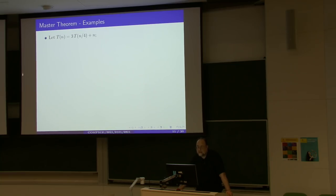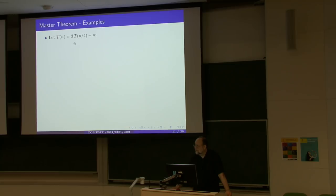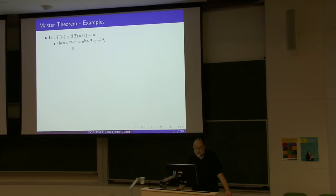Example 3: T(n) = 3·T(n/4) + n. You are splitting a problem of size n into three sub-problems of size n/4 with a linear overhead. We form the pivoting polynomial n^(log₄(3)), which is approximately n^0.8.